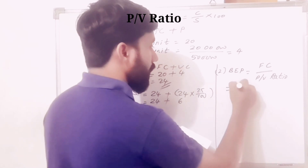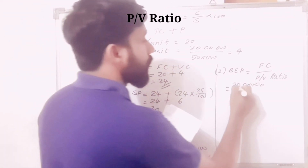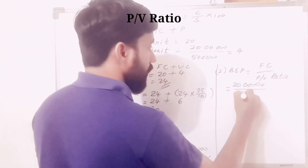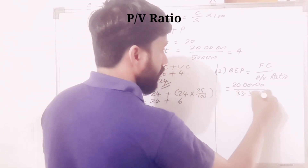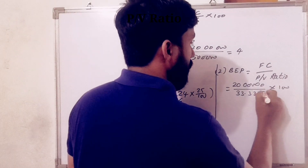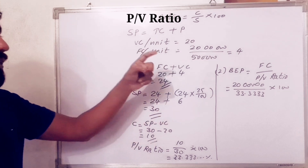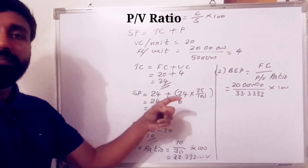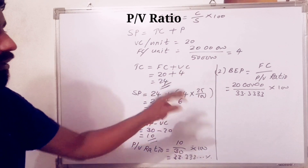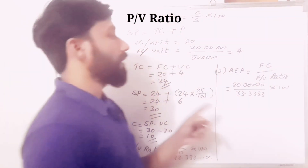Fixed cost is Rs 20 lakhs. Break-even point equals 20 lakhs divided by PV ratio 33.3333%, into 100. That is 20 lakhs divided by 33.33, into 100.